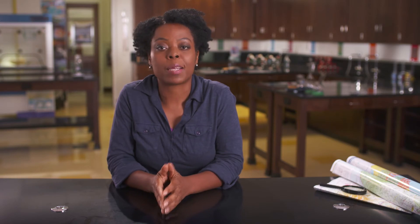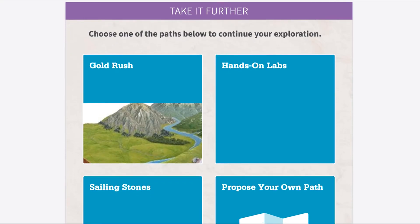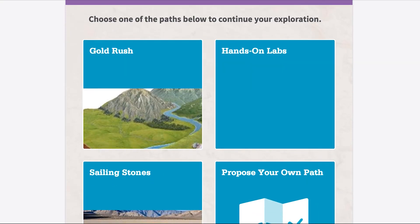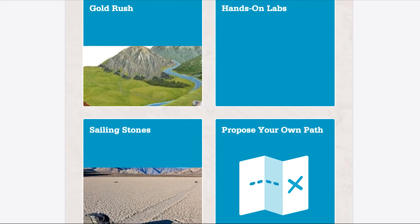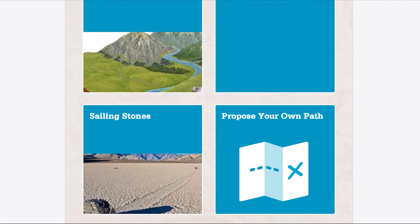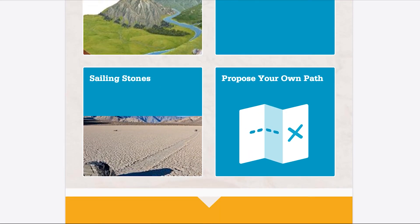Once students have completed multiple explorations within the lesson, they have the opportunity to elaborate on what they've learned by choosing one or more of the four paths. Each path includes formative assessment opportunities similar to those you've already seen. This allows you to gauge student progress so that you can adjust lessons accordingly.